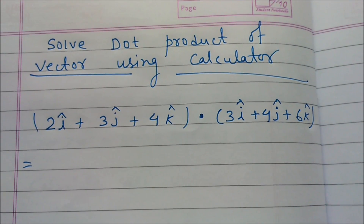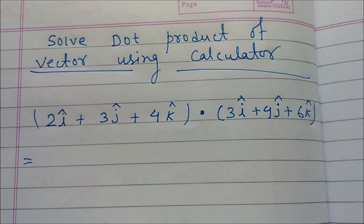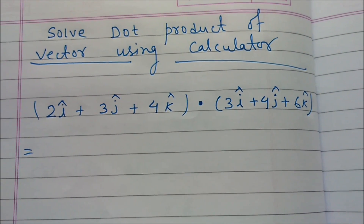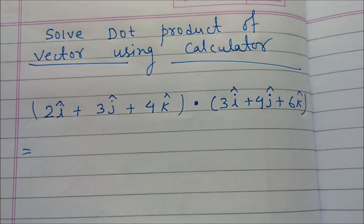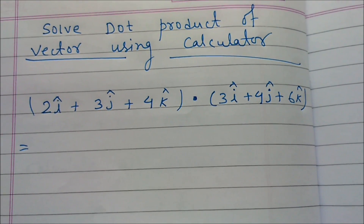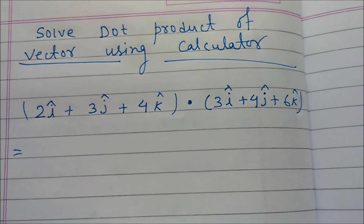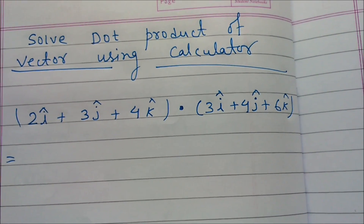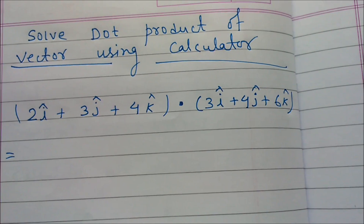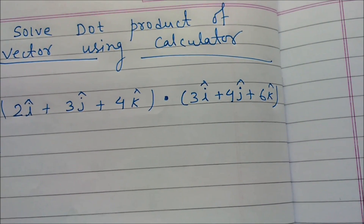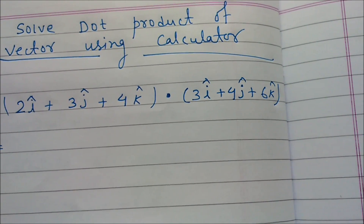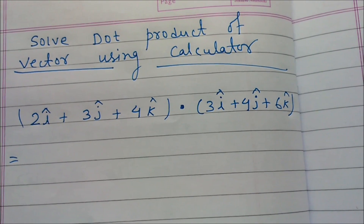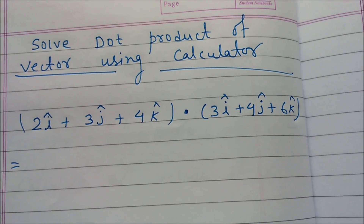In this tutorial, we will solve the dot product of two vectors using a calculator. The first vector is 2i + 3j + 4k and the second vector is 3i + 4j + 6k. We have to calculate the dot product of both vectors.